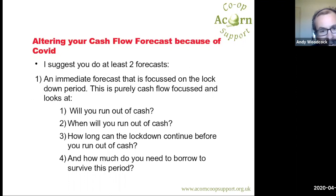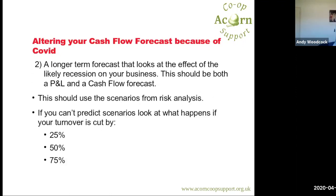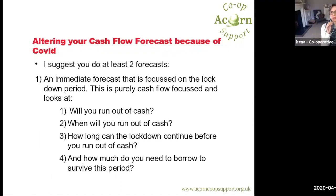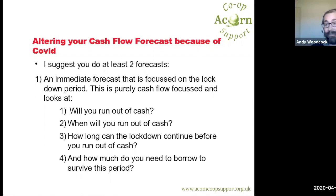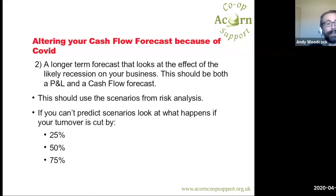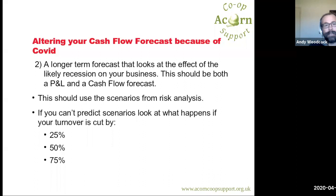I suggest you do an immediate forecast, which is purely focused on the lockdown period and purely a cash flow forecast. It looks at: will you run out of cash, and if so, when? Or if it doesn't look like you'll run out immediately, how long does the lockdown need to continue before you run out — which is useful to know for planning. And if you are going to run out, how much do you need to borrow to survive? You also do a longer term forecast, which looks at the effects of the likely recession on your business. This should be both a P&L and a cash flow forecast, and should model the scenarios from your risk analysis.